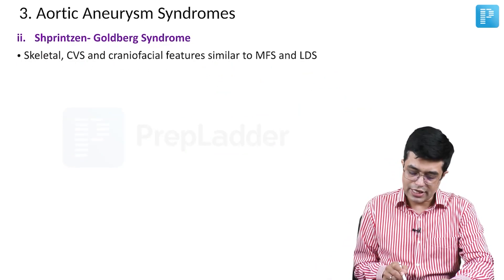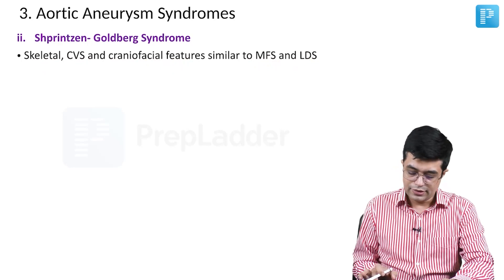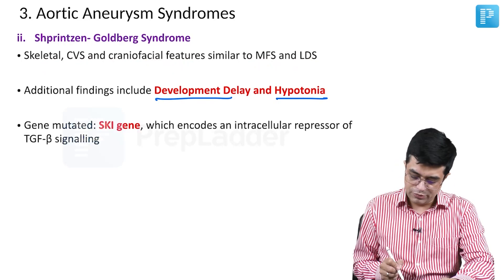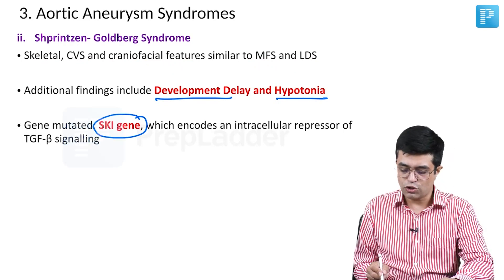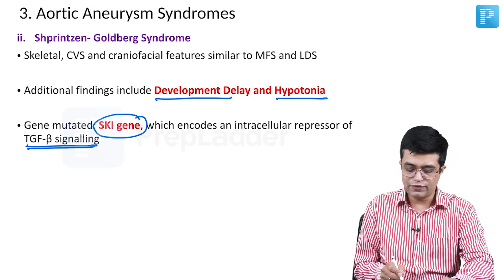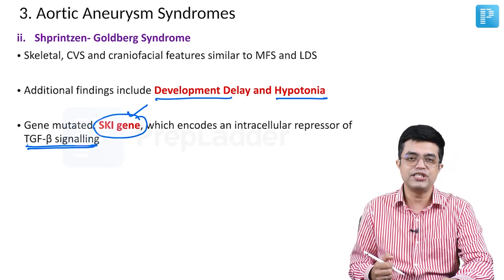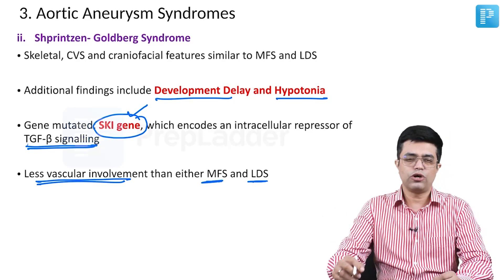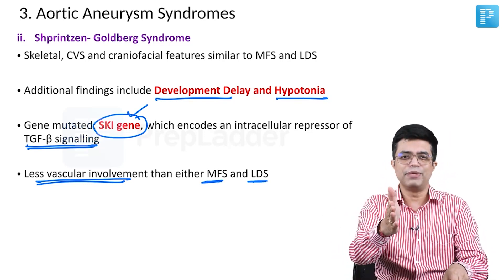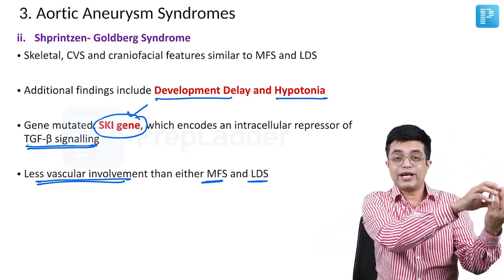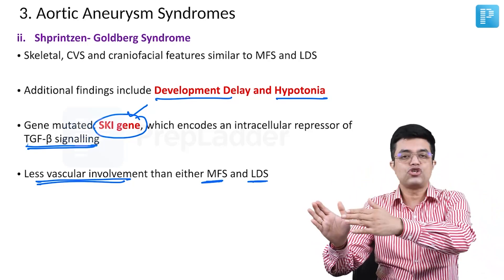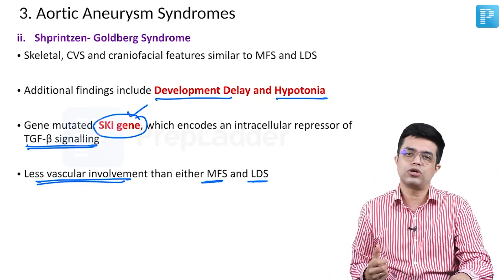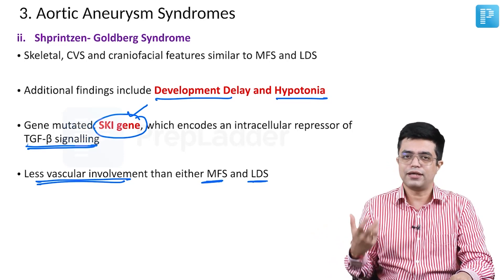Shprintzen-Goldberg syndrome has skeletal, cardiovascular, and craniofacial features similar to Marfan syndrome and LDS, but additional findings include developmental delay and hypotonia, which are not seen in Marfan syndrome. The mutated gene is SKI, which encodes an intracellular repressor of TGF beta signaling — if mutated, the repressor is absent and TGF beta signaling increases. Cardiovascular involvement is relatively milder; surgery is only considered for severe aortic root involvement.